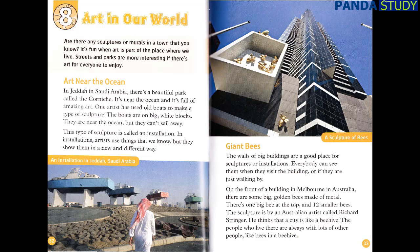Giant Bees. The walls of big buildings are a good place for sculptures or installations. Everybody can see them when they visit the building or if they are just walking by. On the front of a building in Melbourne in Australia, there are some big golden bees made of metal. There's one big bee at the top and twelve smaller bees. The sculpture is by an Australian artist called Richard Stringer. He thinks that a city is like a beehive. The people who live there are always with lots of other people, like bees in a beehive.